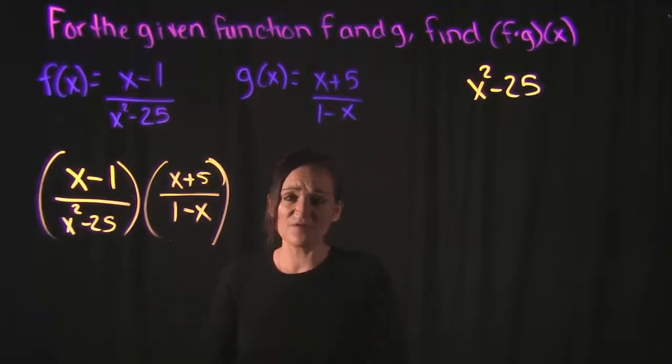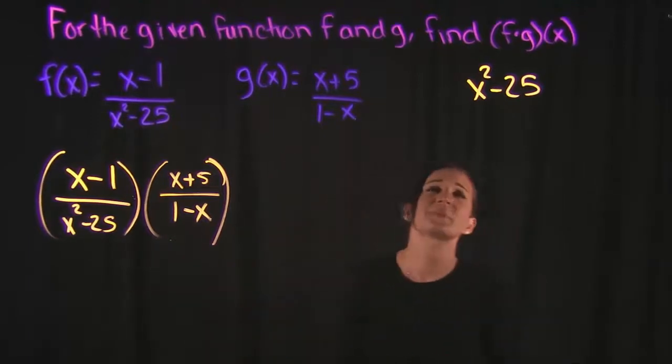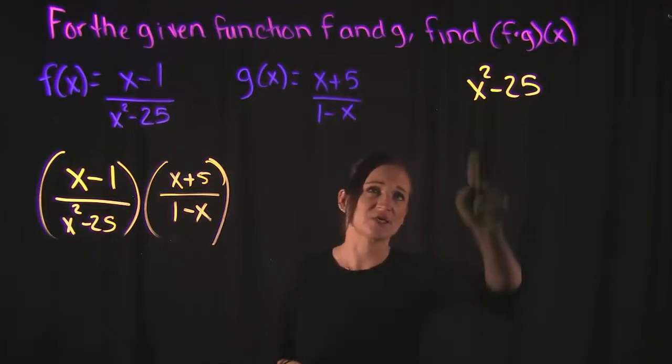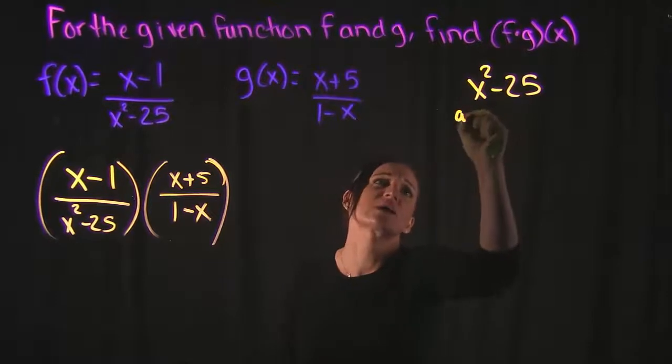But just kind of glance over everything just to see if there's anything that you can do. If it can be factored, you need to do so. If not, we can continue with multiplying. Now, x squared minus 25, I know, is the difference of squares because we have two terms. One is positive, one is negative, and these are both perfect squares.